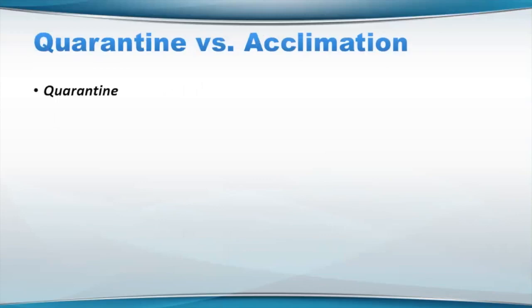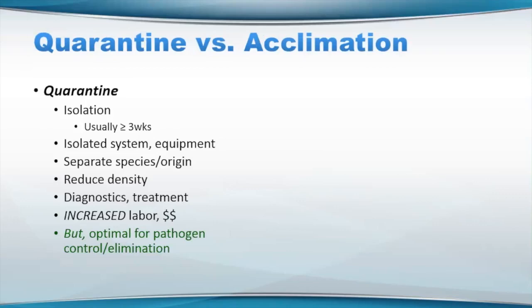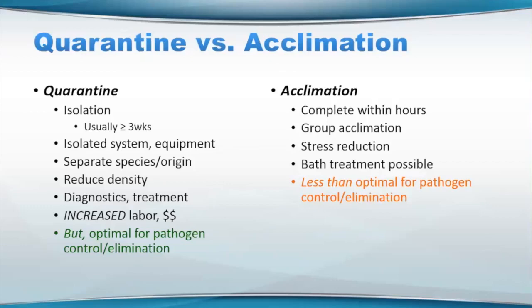So what about acclimation — quarantine versus acclimation? Quarantine involves isolation, usually at least three weeks, maybe four or five weeks or even more, depending on if animals break down with disease or what the concerns are. You want isolated systems and equipment, separate species, and if you have the same species from different sources, separate those. Reduce densities if you can, and you do want to have some sort of diagnostics and treatment if possible to see if there are carriers or other issues. This is going to cost more and require more labor, but it is really the ideal thing to do if you are concerned about things coming on your facility.